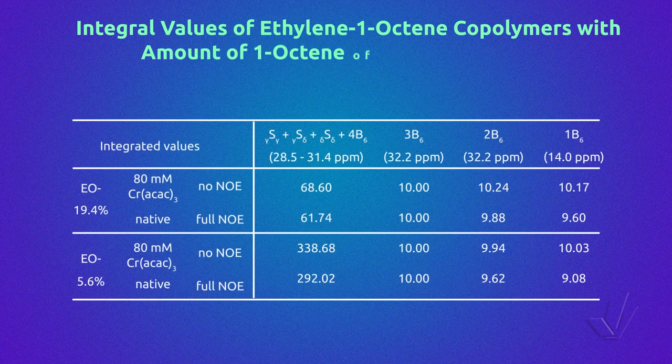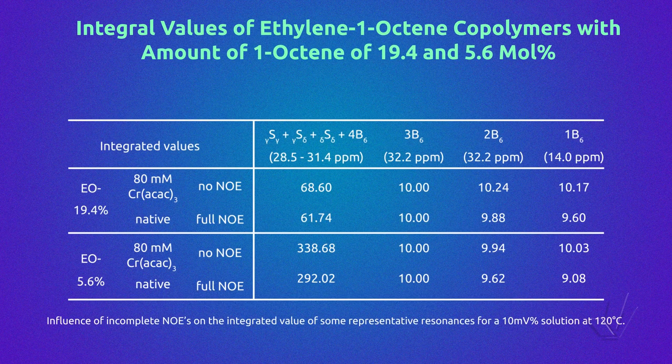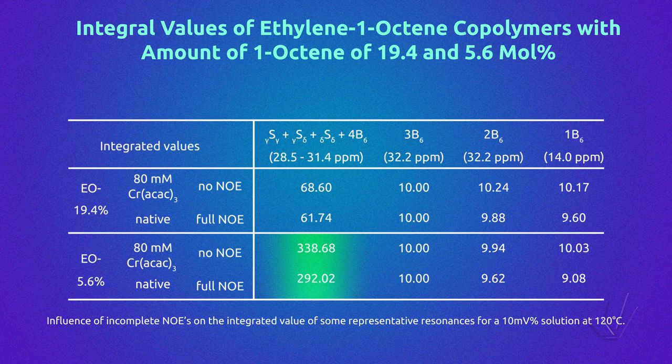They also studied integral values for two ethylene/1-octene copolymers with 1-octene contents of 19.4 and 5.6 mol%. The integrals of most carbon resonances were not affected by the use of NOE. However, the use of NOE resulted in underestimation of integrals in the spectral region between 28 and 31 ppm, most pronounced at low 1-octene concentration. As a conclusion: the use of NOE is beneficial because it reduces acquisition time; a paramagnetic substance significantly reduces relaxation time and analysis time, but concentration must not exceed 80 mmol; and the influence of magnetic field on relaxation time is not significant.